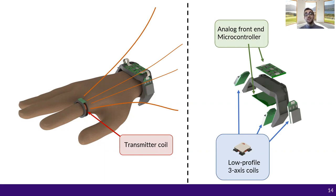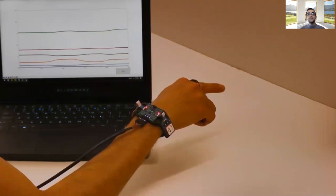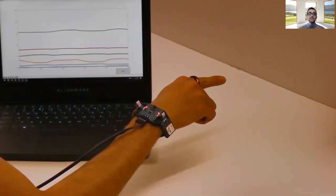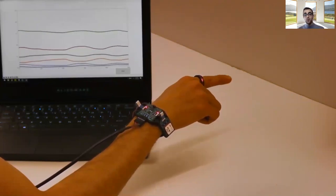We also have two controller boards that handle signal processing and sampling. For more details, please take a look at the paper. Here, we show the raw data that the wristband sends back to the PC. As you see, it's quite sensitive to the finger movement.